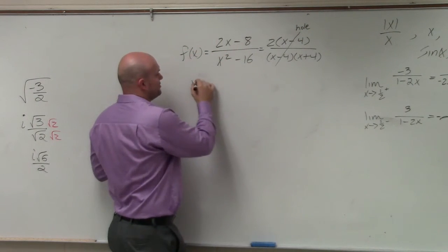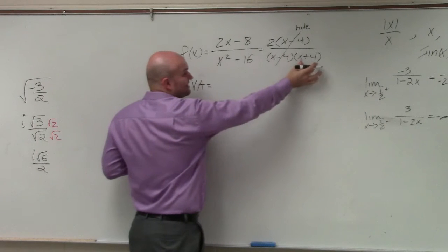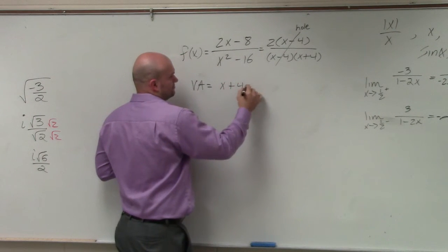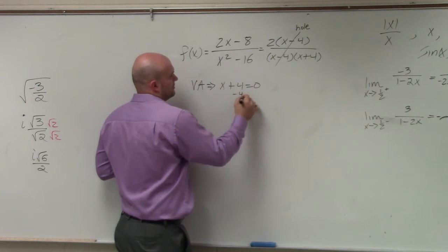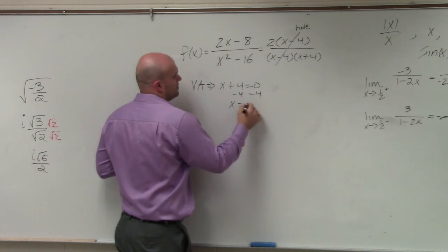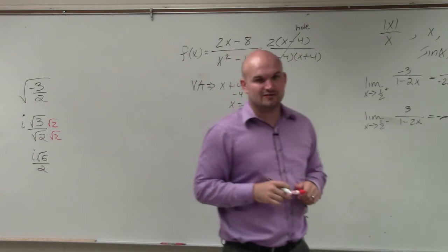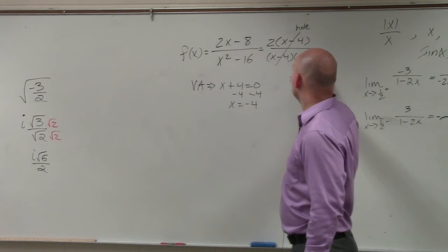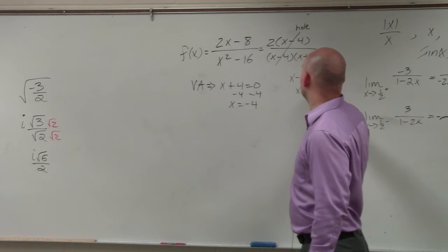To find the vertical asymptote, I'm only going to take this discontinuity and set it equal to zero. So the only asymptote that occurs is at negative 4. x minus 4 equals zero, x equals 4 is still a discontinuity, but it's a hole.